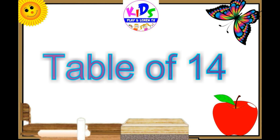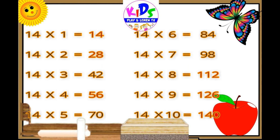Hey kids, let's repeat: 14 ones are 14, 14 twos are 28, 14 threes are 42, 14 fours are 56, 14 fives are 70, 14 sixes are 84, 14 sevens are 98, 14 eights are 112, 14 nines are 126, 14 tens are 140.